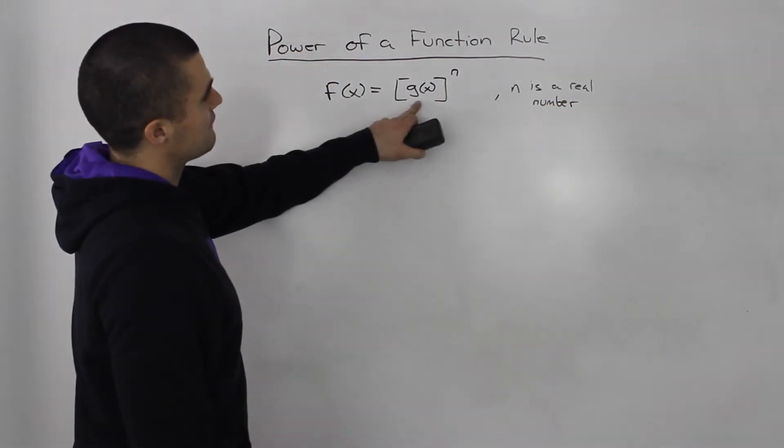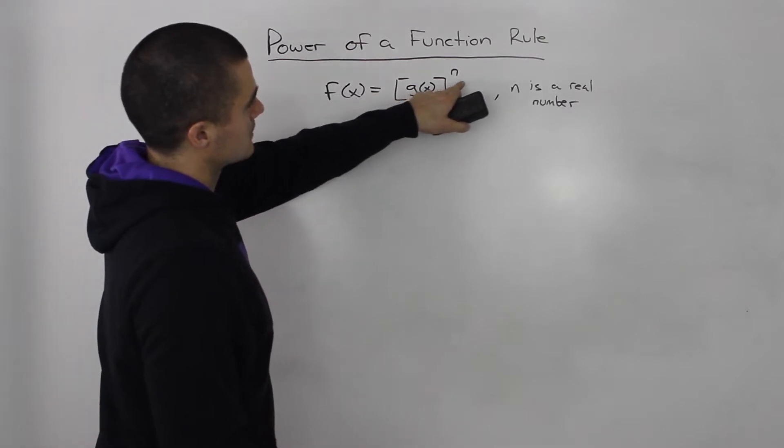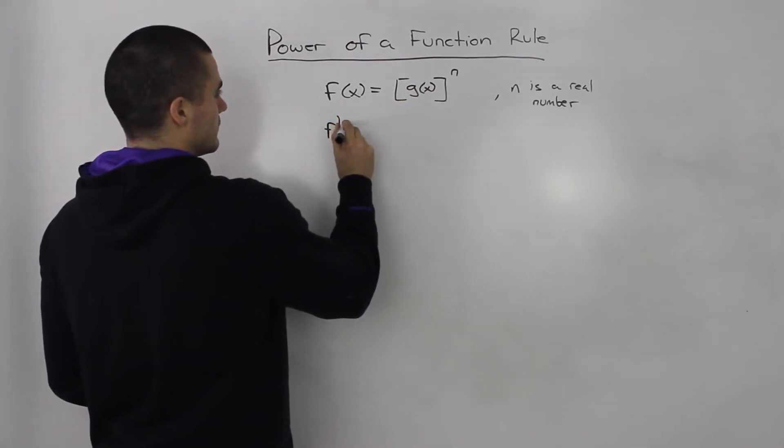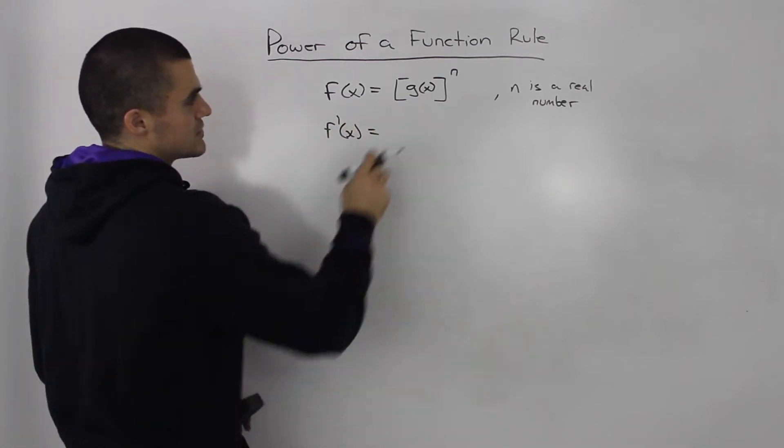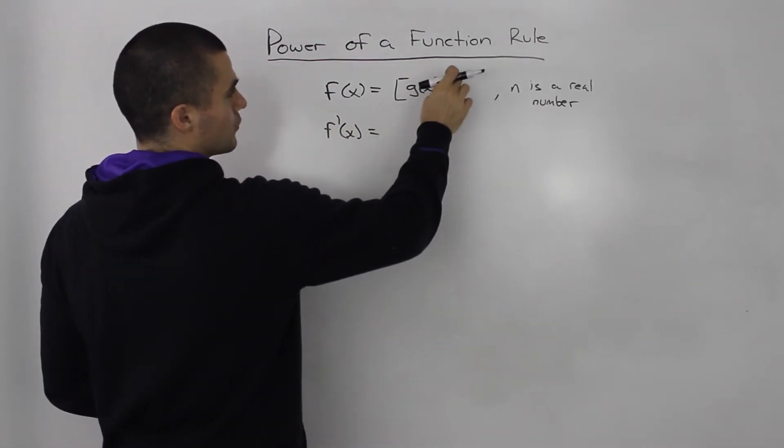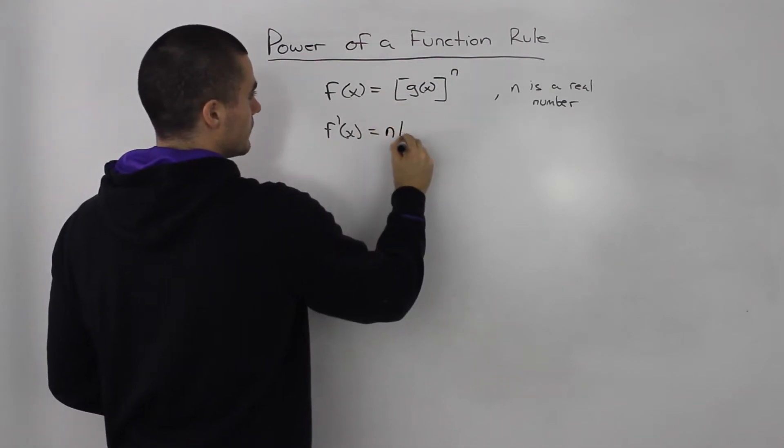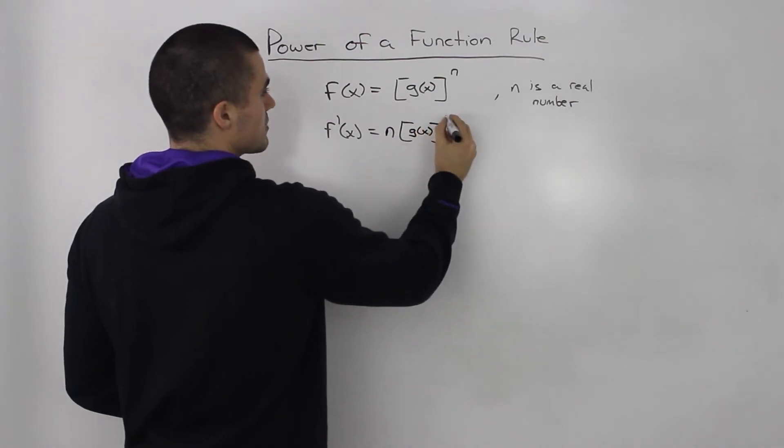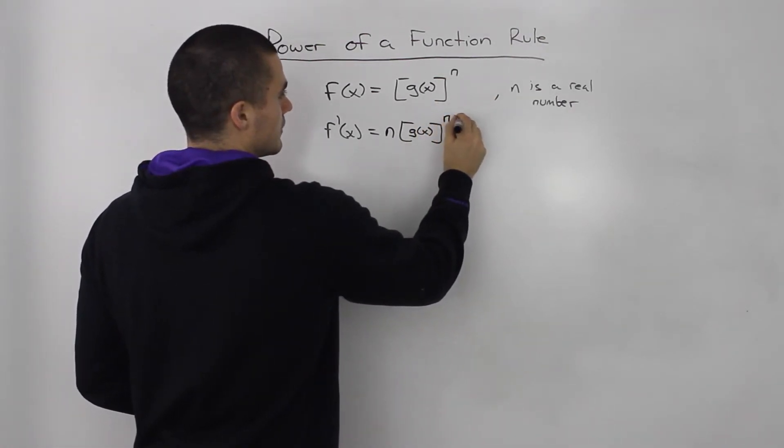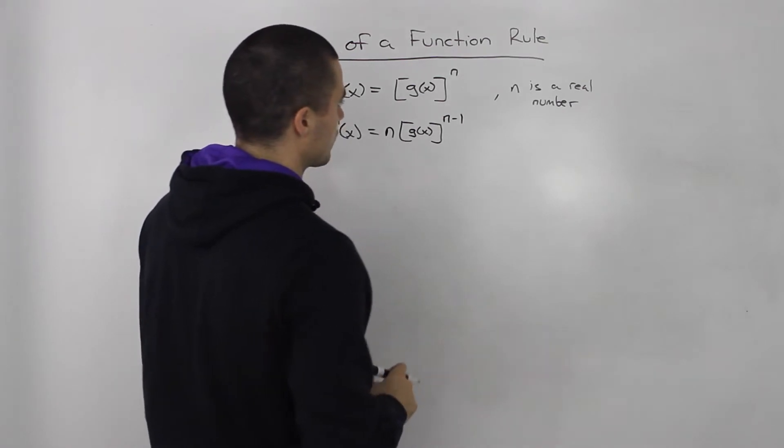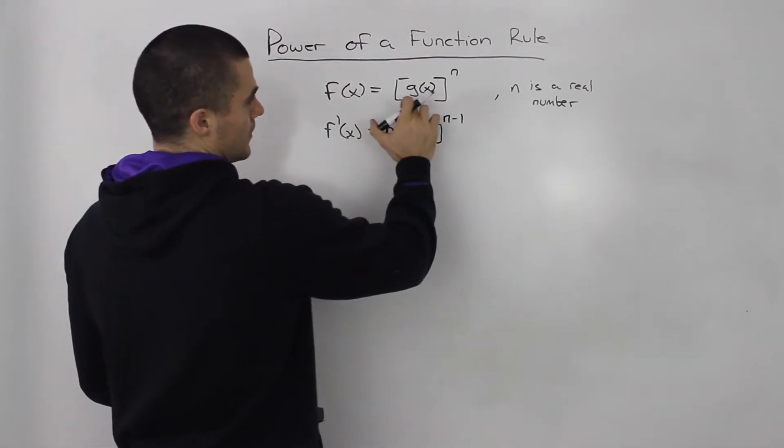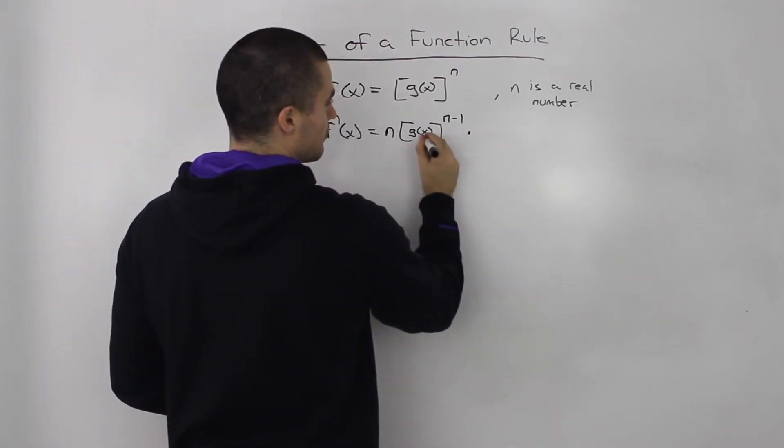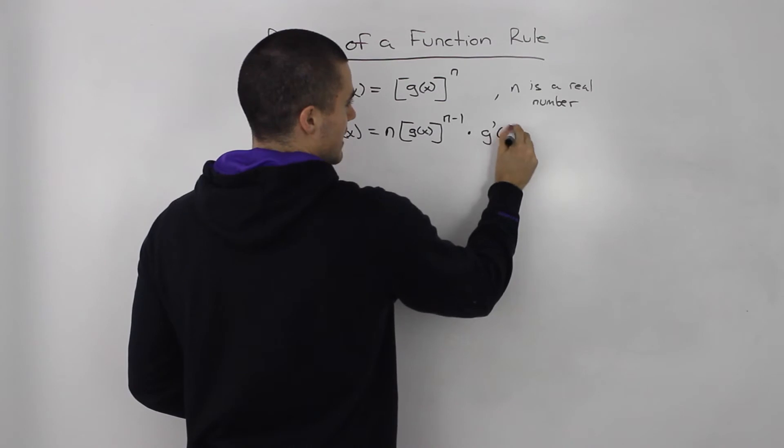All right, so we have some kind of function now to the power of n. Well the derivative of that is going to be, like the power rule, you bring the n down and you'll keep that function there to the power of one taken away from the exponent. So we perform the power rule on this, and then you have to multiply it by the derivative of that inside function.